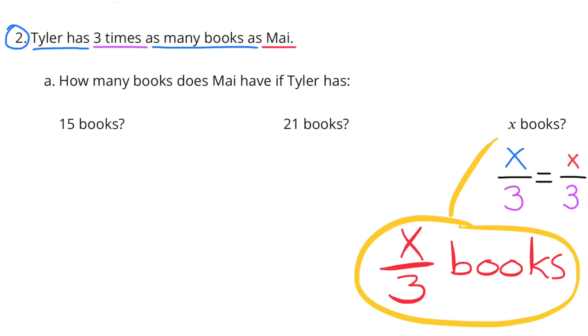How about when Tyler has X number of books? X number of books divided by 3 equals X over 3 books.